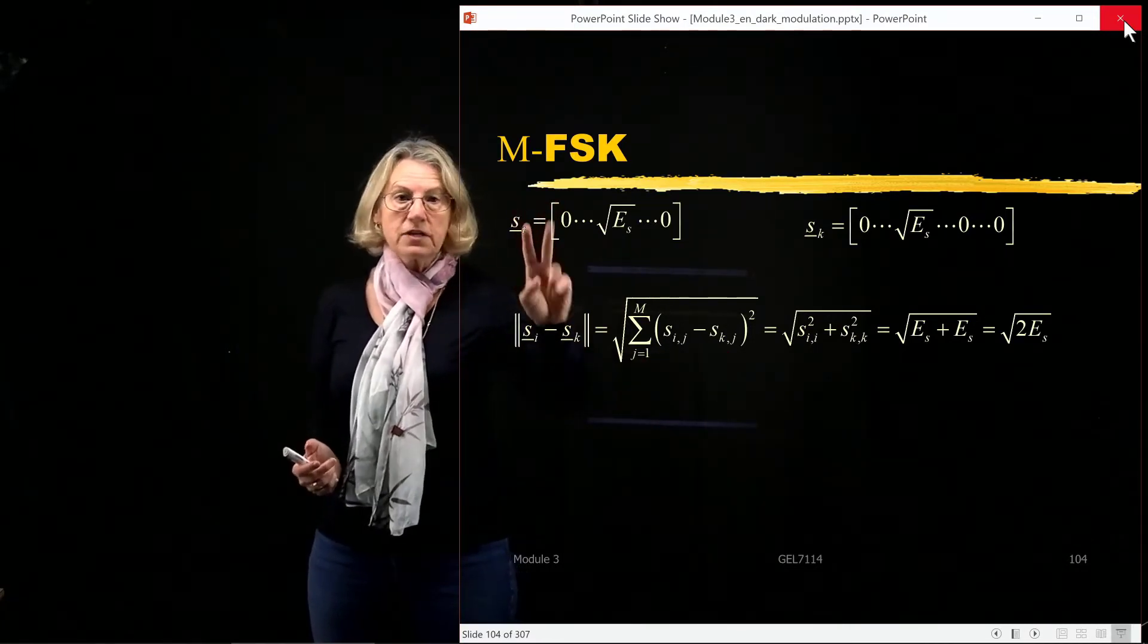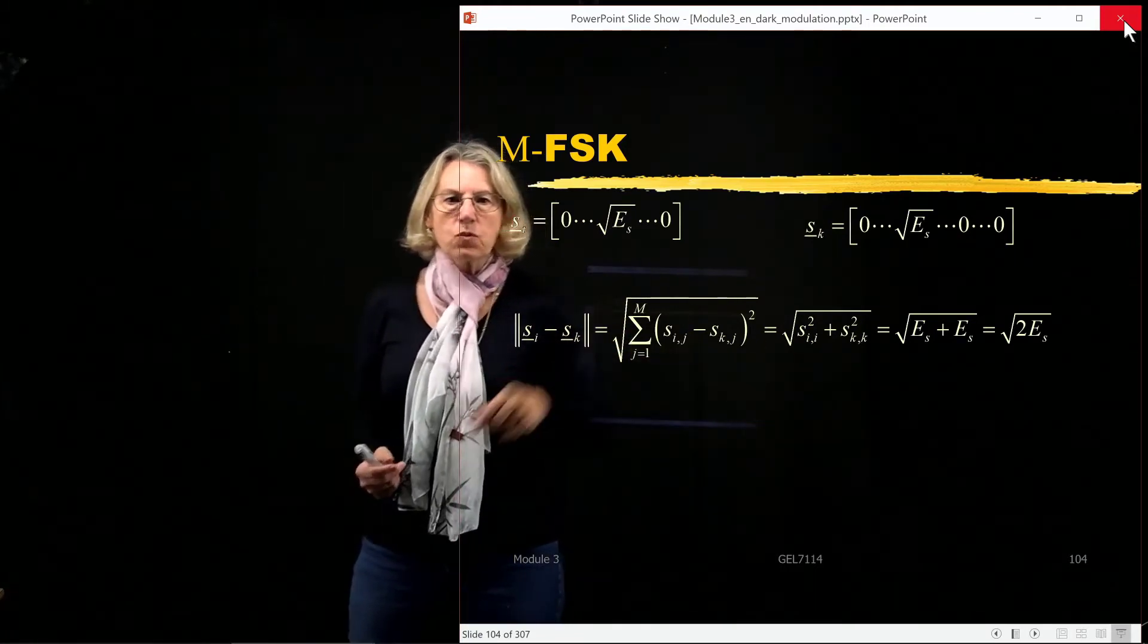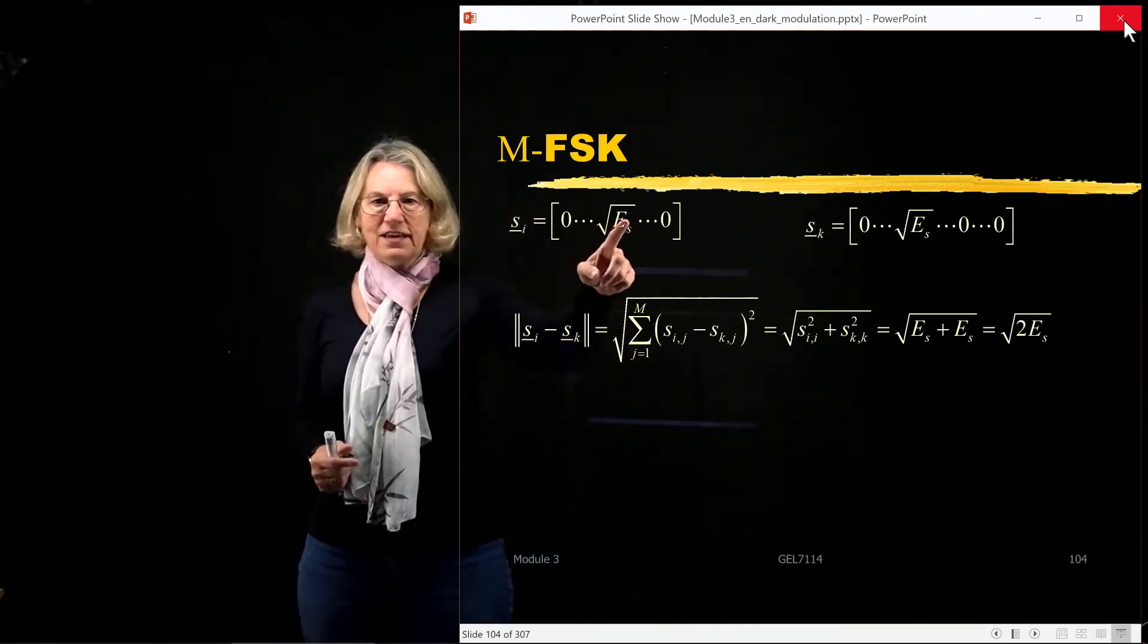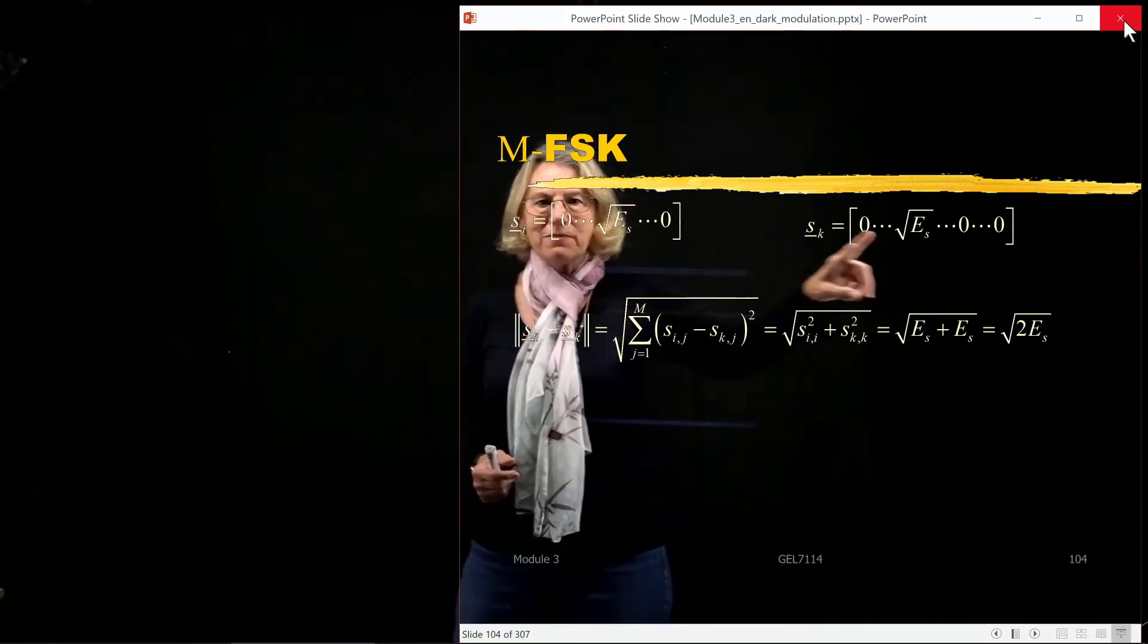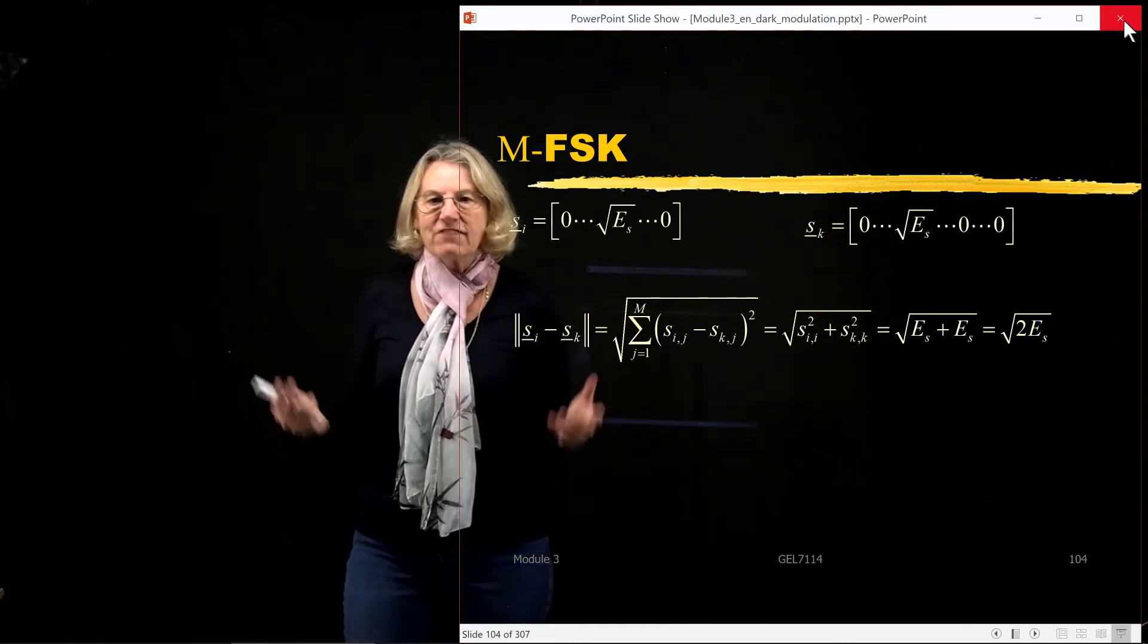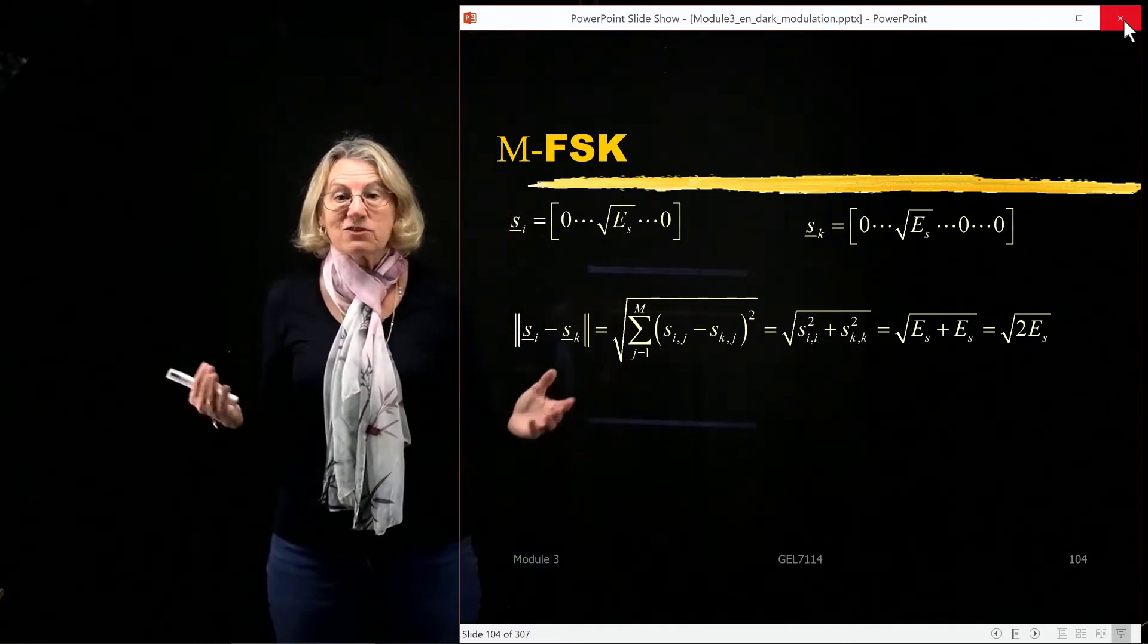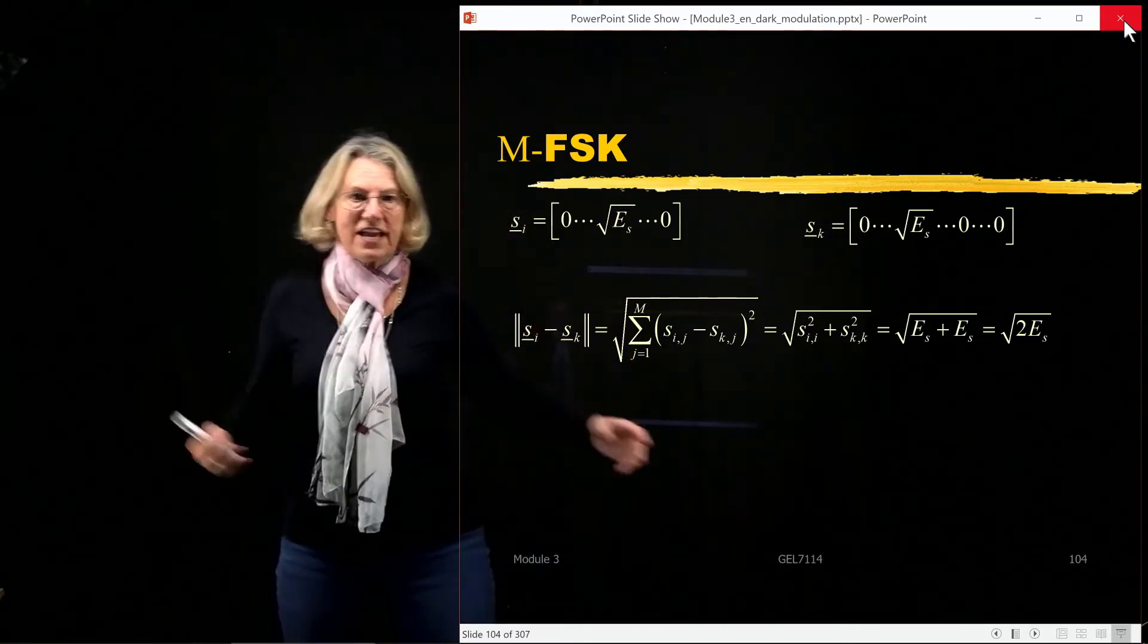except for two values. So in the end, this becomes a square root of the i-th element of si squared plus the k-th element of sk squared. And of course, they both have the same energy.